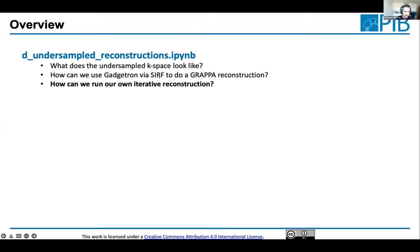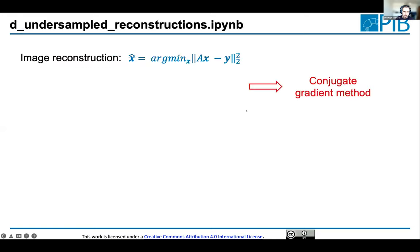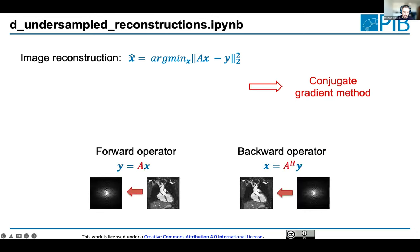There's an undersampled reconstruction notebook going through these approaches — minimizing an L2 norm using a conjugate gradient method. What you need is the acquisition model, the forward operator, and the backward (adjoint) operator, which are already implemented. Once you have the acquisition model, you have everything needed to write a gradient-based approach. The notebook shows how to do this either using existing SIRF functionality or by writing it yourself in just a few lines of code.